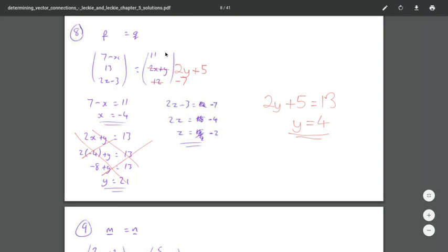So looking at the x components in the top row, 7 minus x equals 11, so x would equal negative 4.